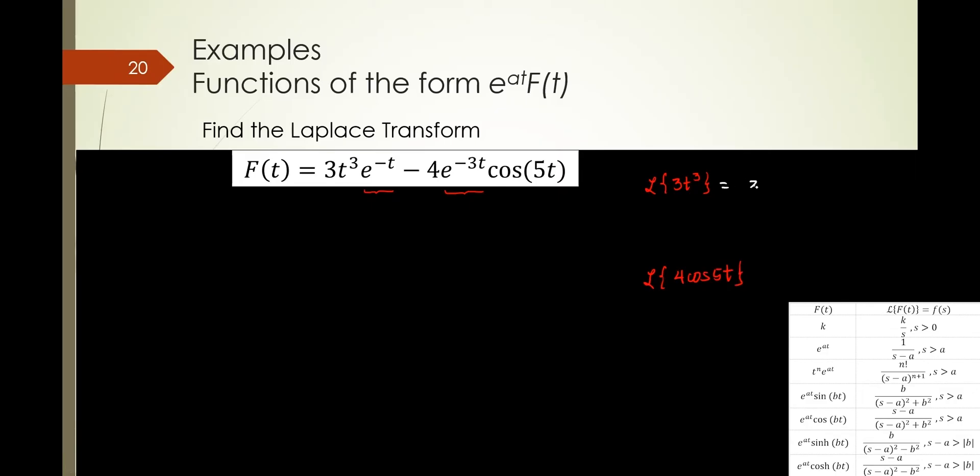So here, I don't need the 3. I bring it out. Times what? S to the 4. Am I correct? Here, I don't need the 4. Bring it out. And then what happens?